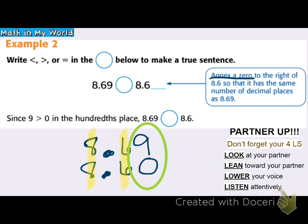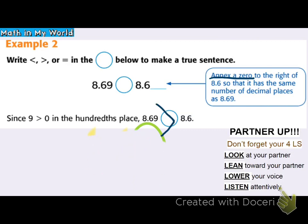So I know that 8 and 69 hundredths is a greater value — it's greater than 8 and 6 tenths. I know it's reasonable because 9 hundredths is more than having no hundredths. I have the correct answer.